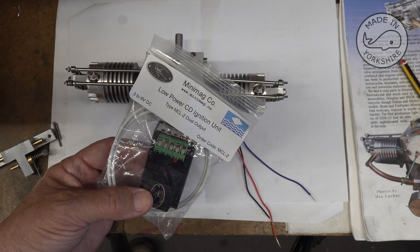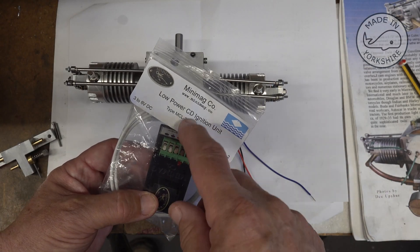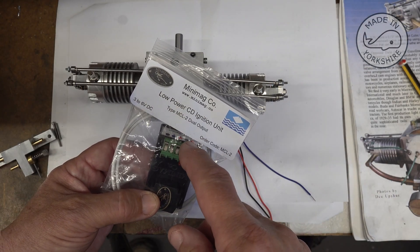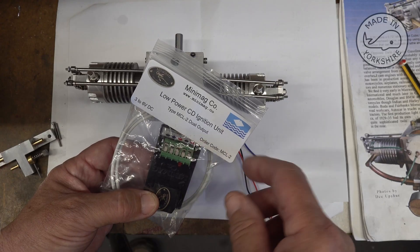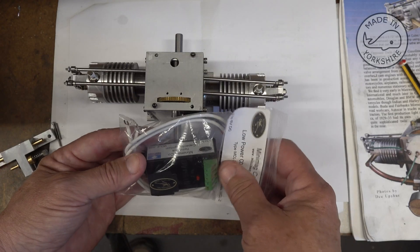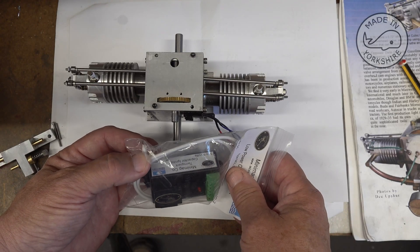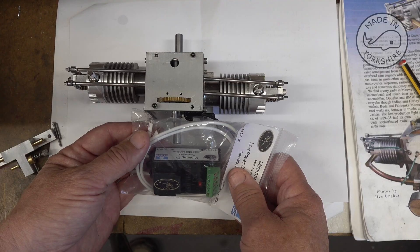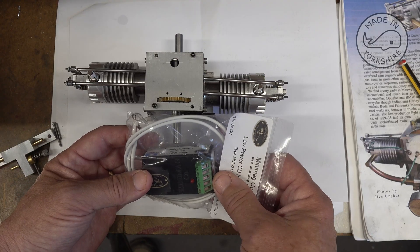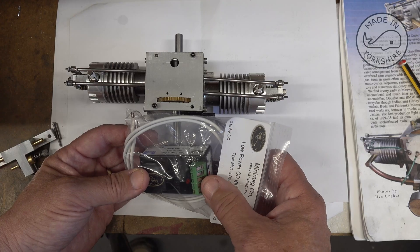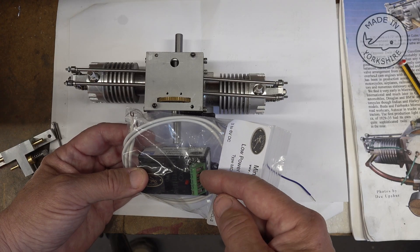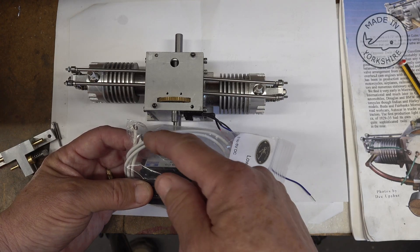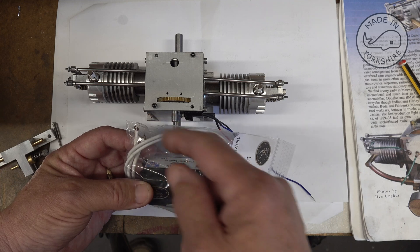Now for the ignition I'm going to use this one from Minimag and this is a dual output so it's got two leads coming out of it, one for each spark plug. Now this unit, when the hall sensor triggers it, it'll generate a spark on each of these at the same time.